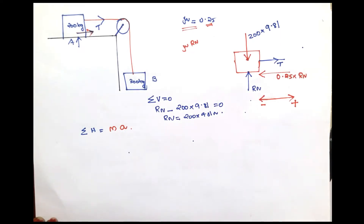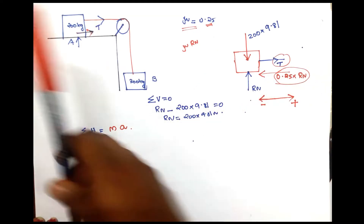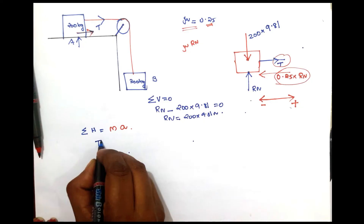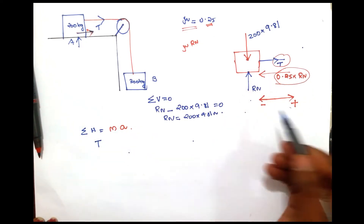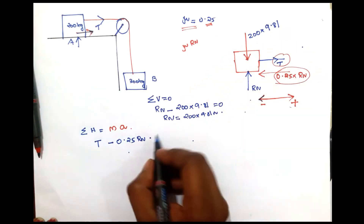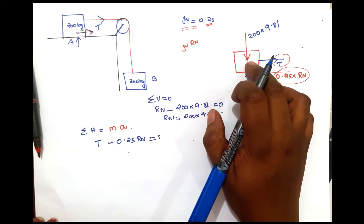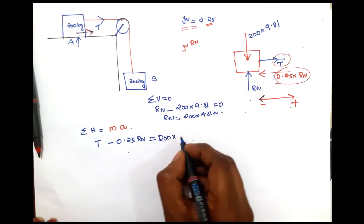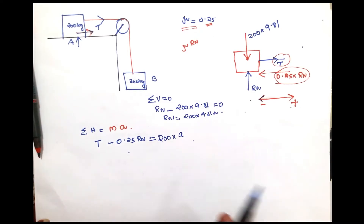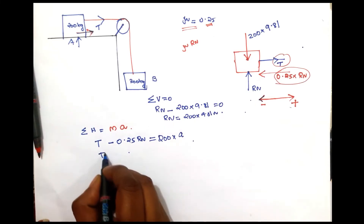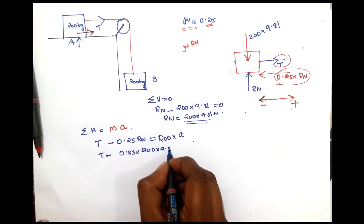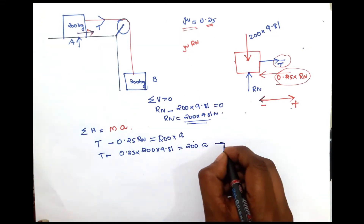Now, in the horizontal direction: what forces act horizontally? Tension T acts in the positive direction (direction of motion). Friction force acts negatively: minus 0.25 into RN. The net horizontal force equals mass times acceleration: T minus 0.25 into RN equals 200 into A. Substituting RN equals 200 into 9.81, this becomes Equation 1.